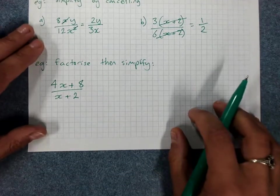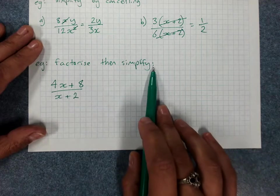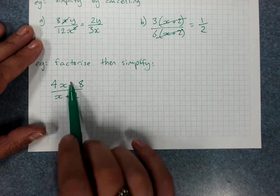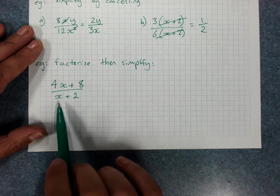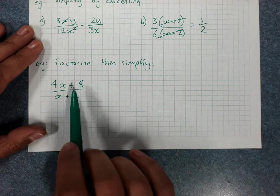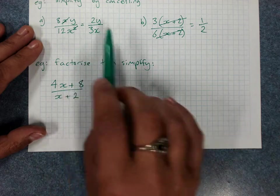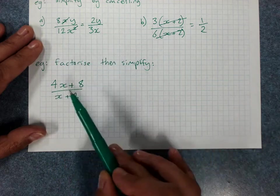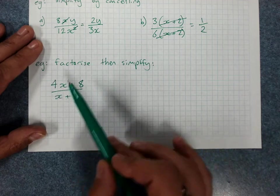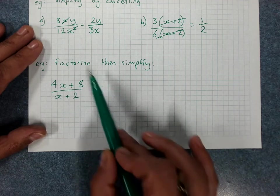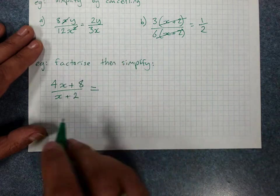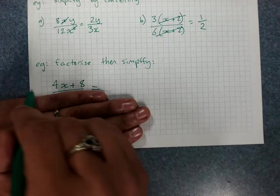And then our slightly harder skill, factorise it first, then simplify. Now when things are added together on the top and bottom, I can't just go, oh look, I can cancel the x's. Because factorising is about multiplying. Simplifying only works by cancelling when everything's multiplied together. But if I factorise first, things get a lot easier.